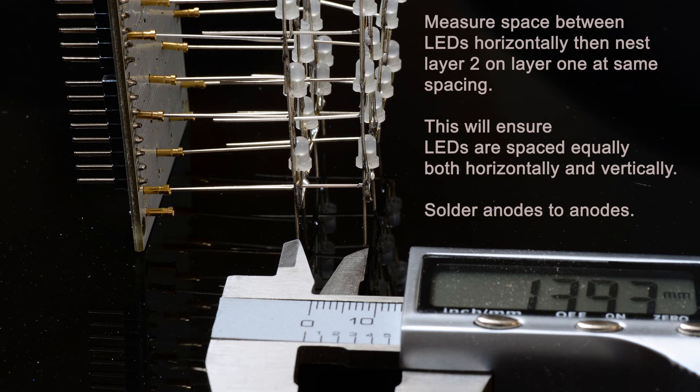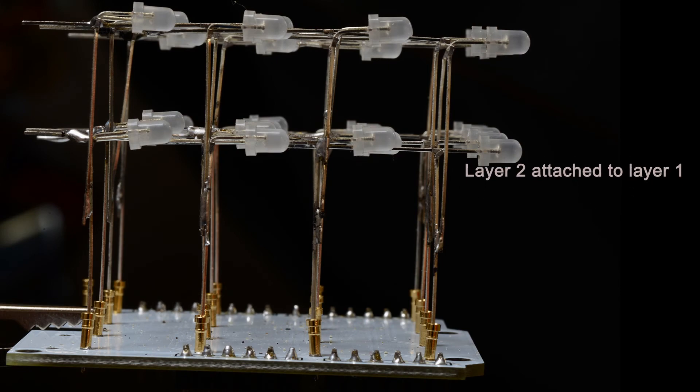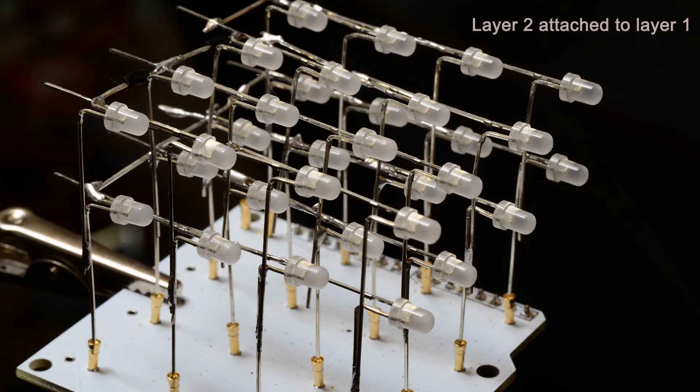First, solder each corner anode to anode, then carefully solder all the remaining anodes to their corresponding anode to connect the first layer to the second. Repeat this assembly process for layers three and four.